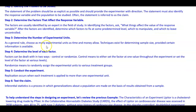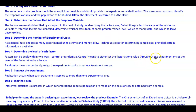Step three: determine the number of experimental units. As a general rule, choose as many experimental units as time and money allow. Techniques exist for determining sample size, provided certain information is available. Step four: determine the level of each factor. Factors can be dealt with in two ways — control or randomize. Control means to set the factor at one value throughout the experiment or at various levels. Randomize means to randomly assign the experimental units to various treatment groups.